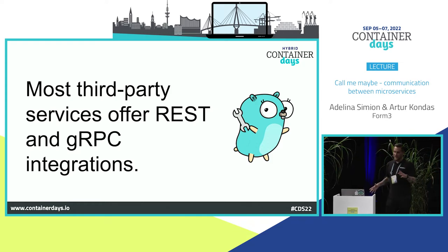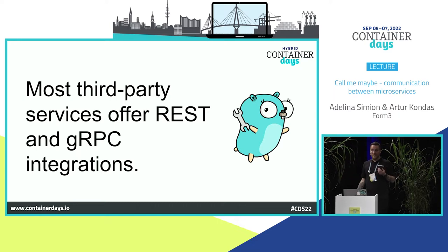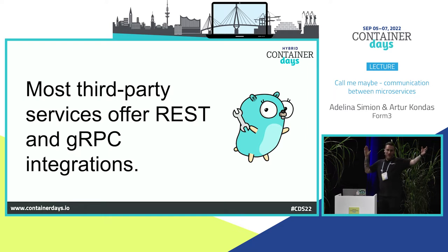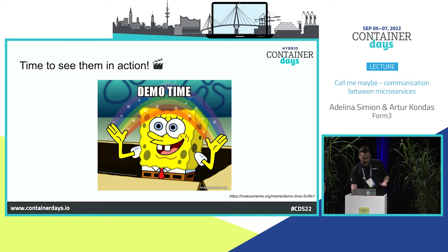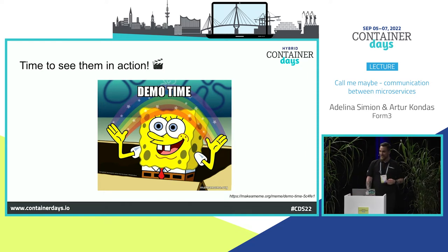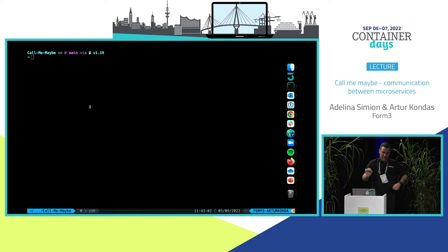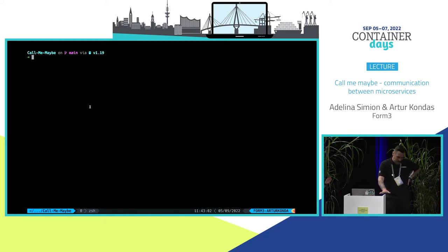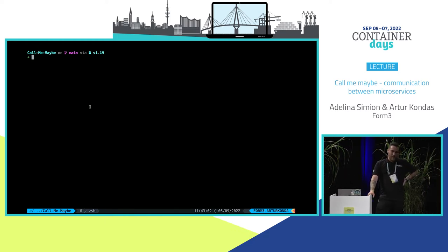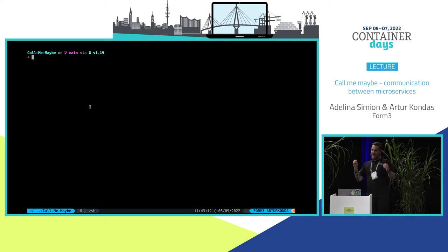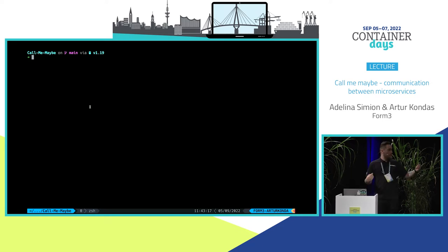Most third-party services offer REST and gRPC integrations. If you have your Postgres database, you can use the standard long connection string, or you can use gRPC underneath, which makes it even faster. For the demo: every benchmark we did was done locally. We haven't containerised it for a reason — when you containerise it, it works even better. We wanted to show you on the bare bones how it would work.